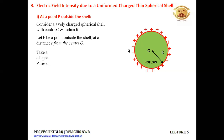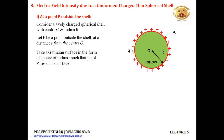Let P be a point outside the shell at a distance small r from the center O. To apply Gauss's law we take a Gaussian surface in the form of a sphere. Due to the symmetry of the spherical shell, it is easy to take a sphere and calculate its surface area. The Gaussian surface is a sphere of radius small r such that point P lies on its surface.